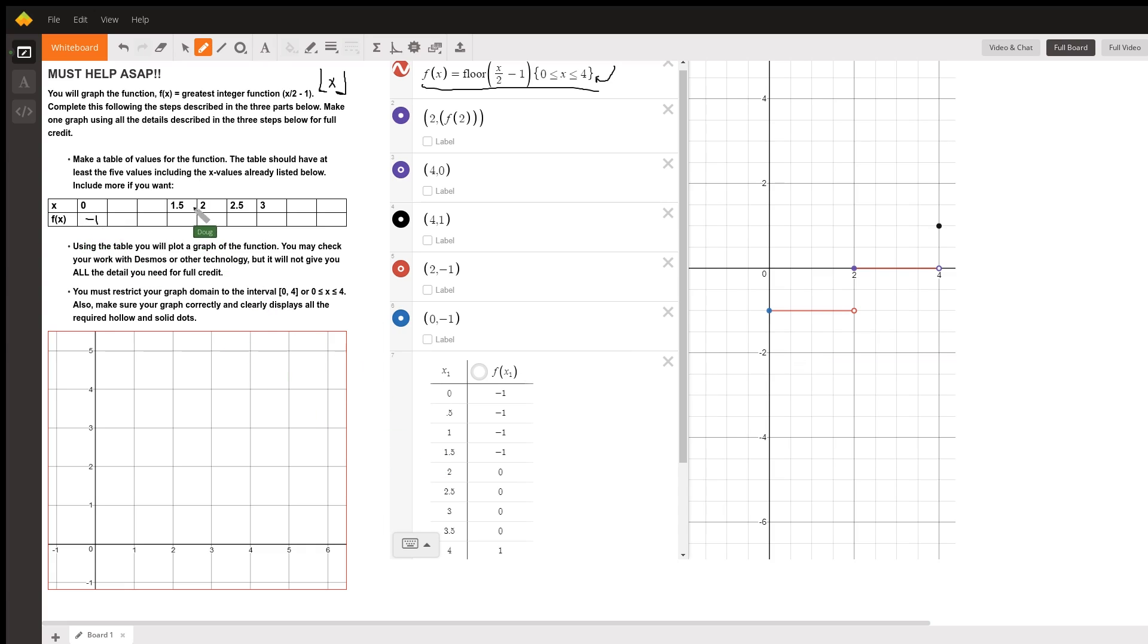And likewise, for 1.5, take half of that and then subtract 1. Here are the function values right here. I made up a little table. It doesn't show the rest of them here. But here's the key.